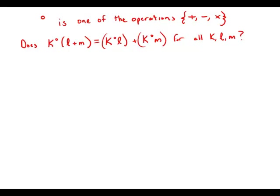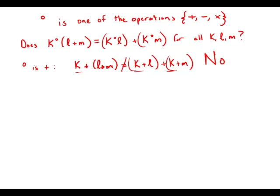So let's experiment here. Suppose circle is addition. Well, then this equation would say k plus l plus m, which would just be k plus l plus m, which would be k plus l plus k plus m. Well, that doesn't seem to work because we wind up with one k on one side of the equation and two k's on the other side of the equation. So this statement does not work if circle is addition.